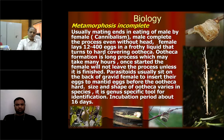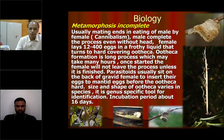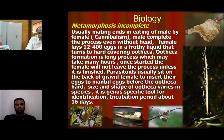Once the female starts the egg-releasing process, she will not leave until it is finished. Even if you touch the female during egg laying, she will not fly or move — you can even catch her. The shape of the ootheca is another tool for species identification — ootheca shape is genus-specific. For each genus, the shape of the ootheca is different. The incubation period is about 16 days, after which nymphs will start coming out.